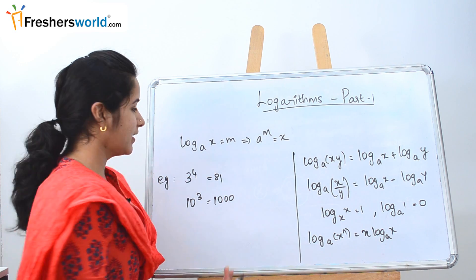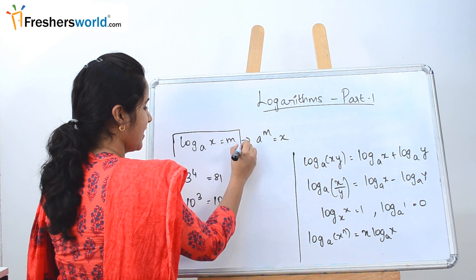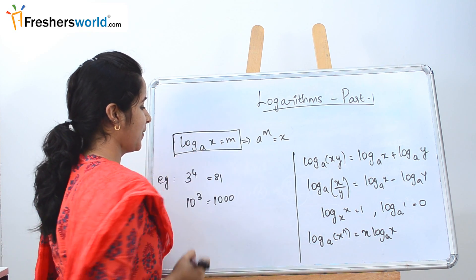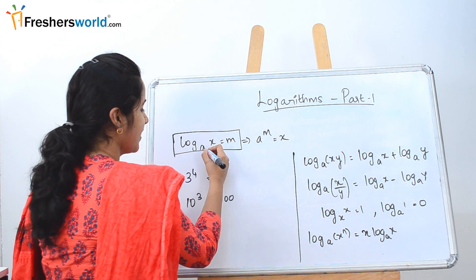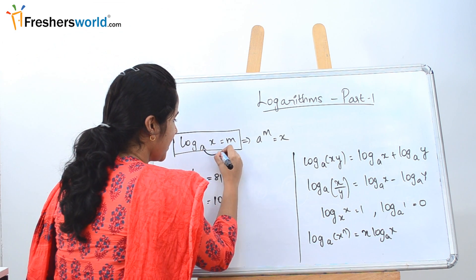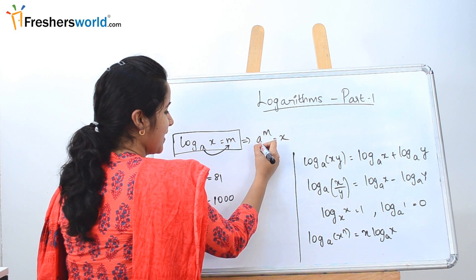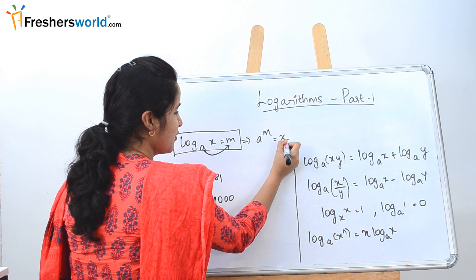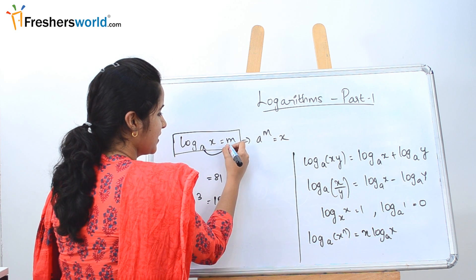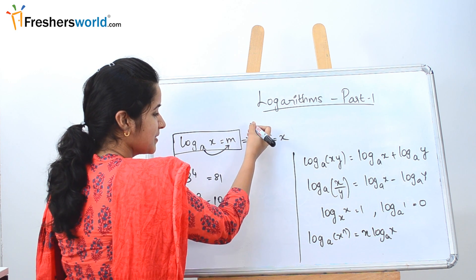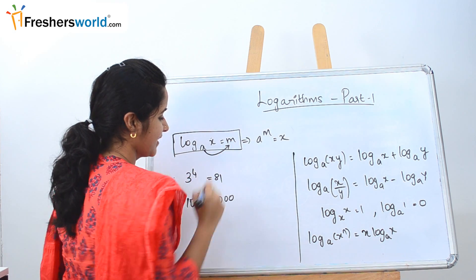The main formula in logarithm is log_a(x) = m. To simplify: a here becomes the base and m becomes the power, which is equal to x. So a^m = x.